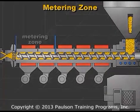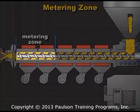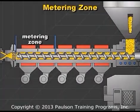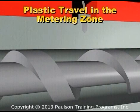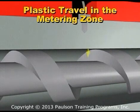From the compression zone, the plastic goes to the metering zone. In the metering zone, the plastic melt moves in a spiraling motion down the channel.